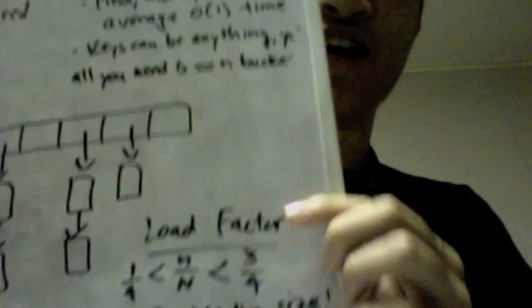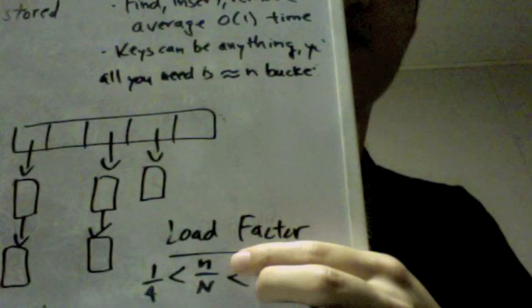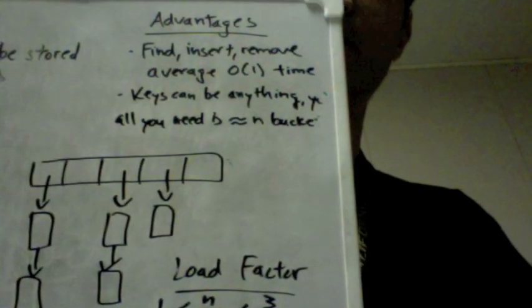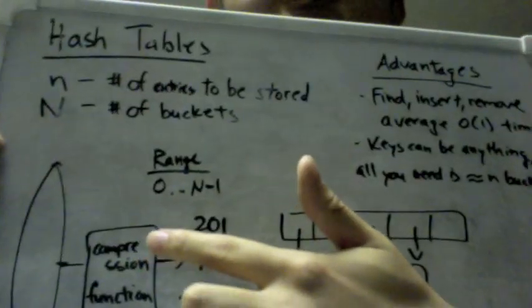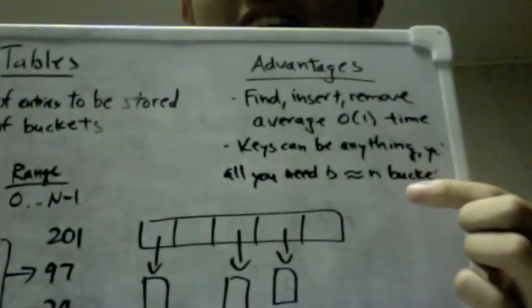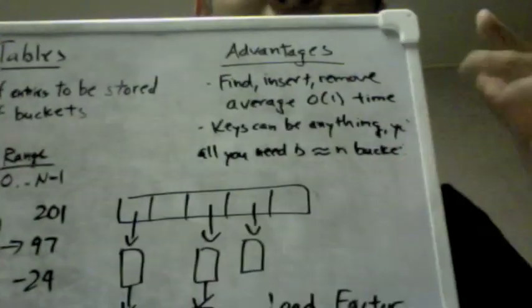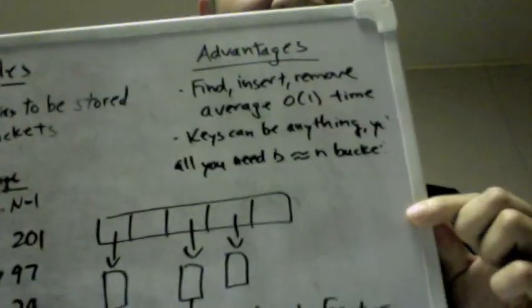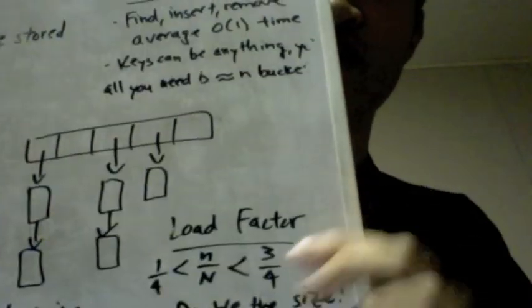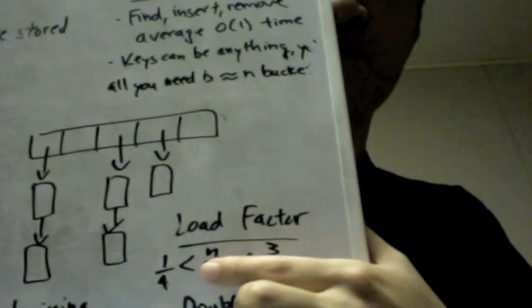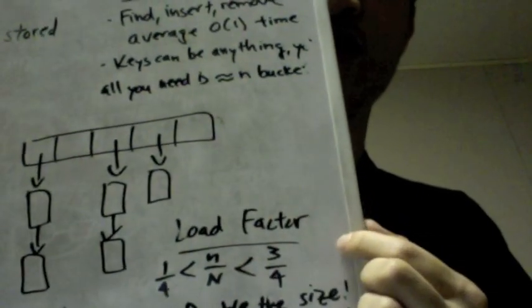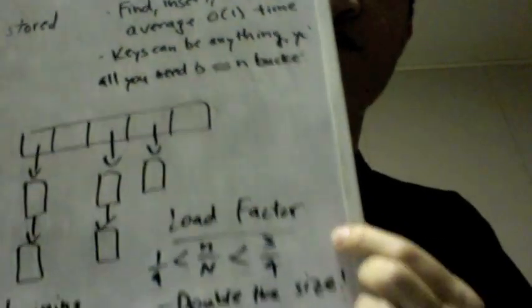Now let's talk about the load factor, which is the ratio of little n, as you can recall, is the number of entries to be stored over big N, the number of buckets. You want to maintain this invariant here, where your hash table is not much longer than the number of items you want to store.